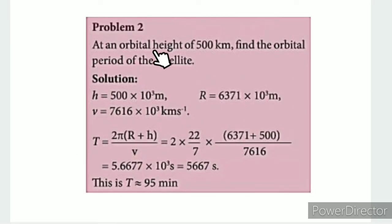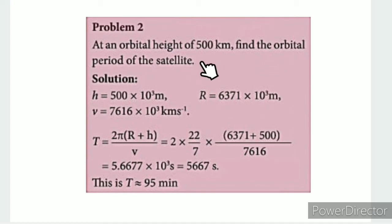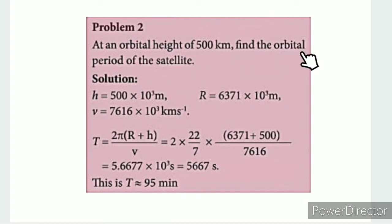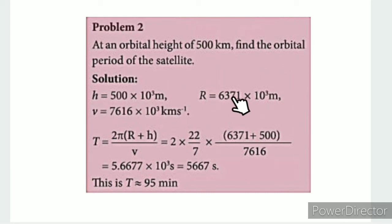Problem 2: At an orbital height of 500 km, find the orbital period of the satellite. We know the radius of the Earth and the orbital velocity. We need to find the time period.